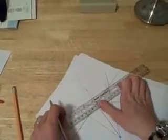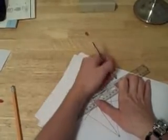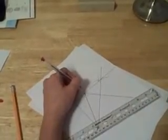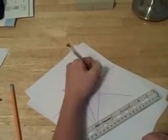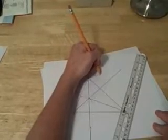If we connect the vertex through that intersection point, there's our altitude right there. And if you see, all three of these altitudes intersect in one central point. That central point is called the orthocenter.